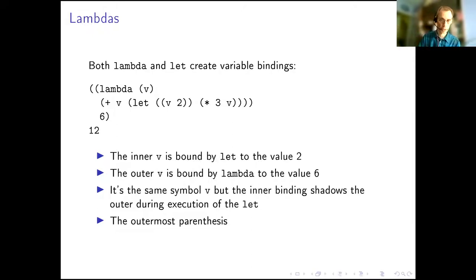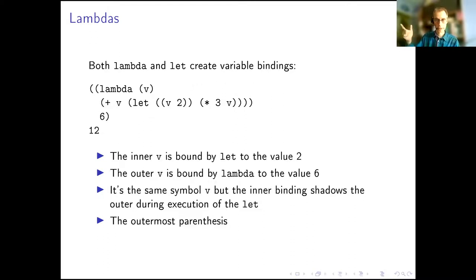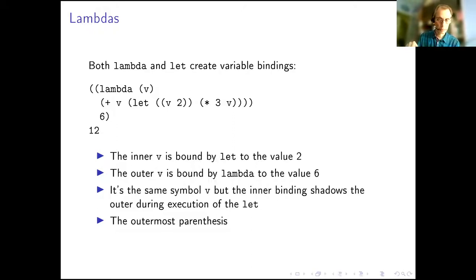Inside the function body there's an expression plus v and another let that binds v again. So the same symbol v represents a variable in both cases but with different bindings. The innermost binding is created by let and binds v to 2, and 3 times 2 is 6. The outermost binding is set by the function call in the lambda expression, binding v to 6, so you get 6 + 6 = 12.